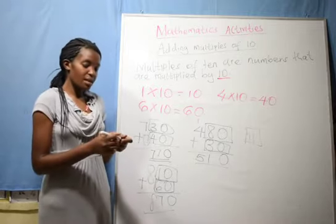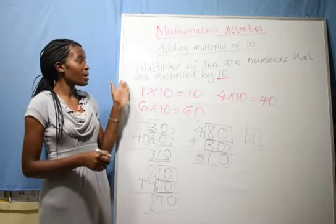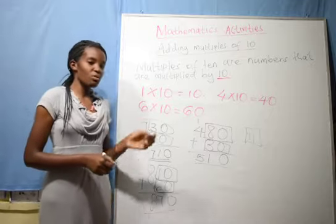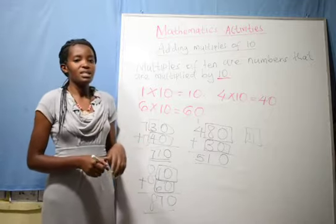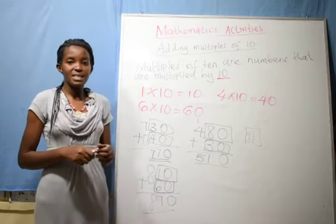Now, those are the multiples of 10. And we have said that the multiples of 10 are the numbers that are multiplied by 10. If it's 1 times 10, you get 10. 2 times 10, you get 20. So, goodbye. Have a nice time.